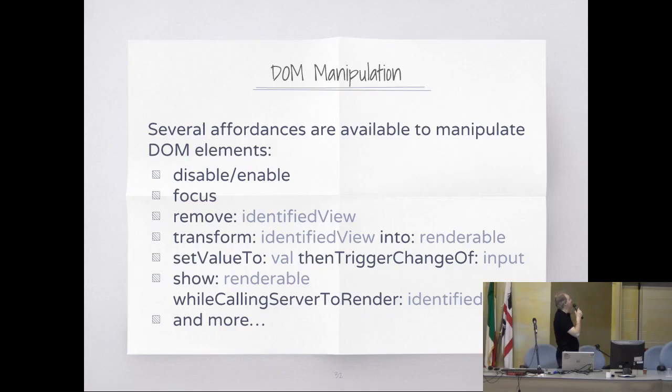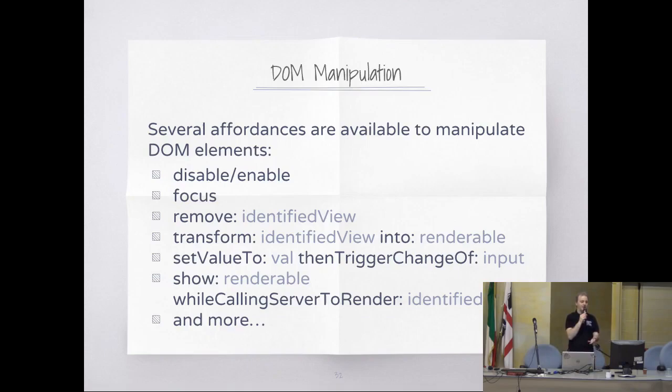There is a list of other affordances I won't enter in detail. You can manipulate document parts: disable, enable, get focus, remove something, change some parts for another. For example, show renderable while calling the server — really useful, because you can say show this spinner while calling the server and when you're back, render a new view.